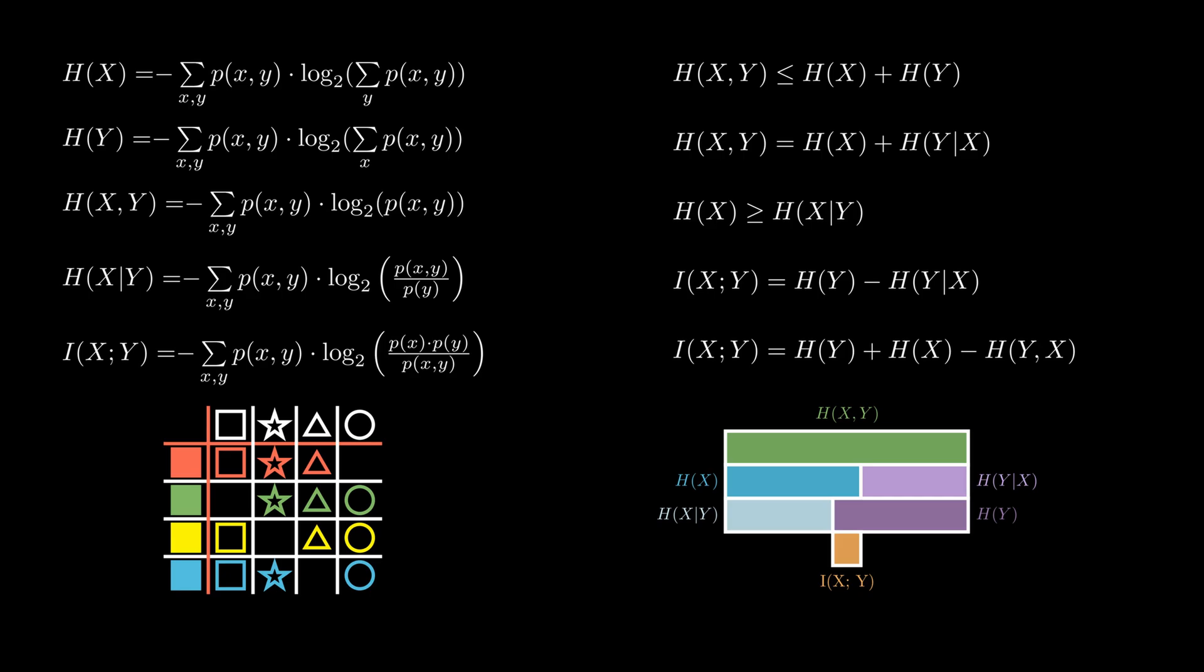Right now, I am going to show you two special cases to further improve your intuition. But before that, I encourage you to pause the video and think about when will the joint entropy be exactly equal to the sum of the individual entropies? And when will the entropy of one of the events be exactly equal to the conditional entropy of that event given the second one?